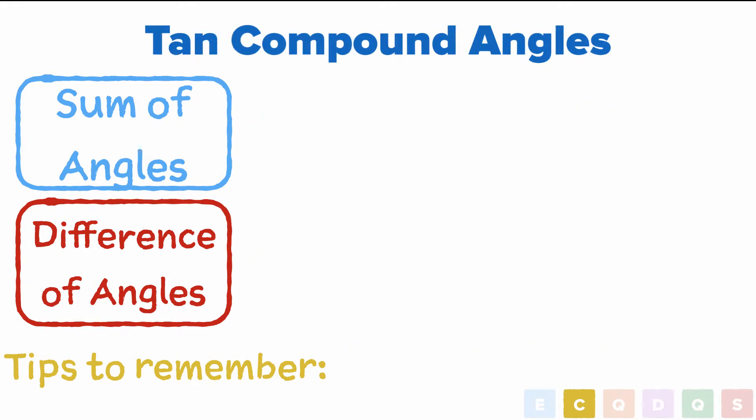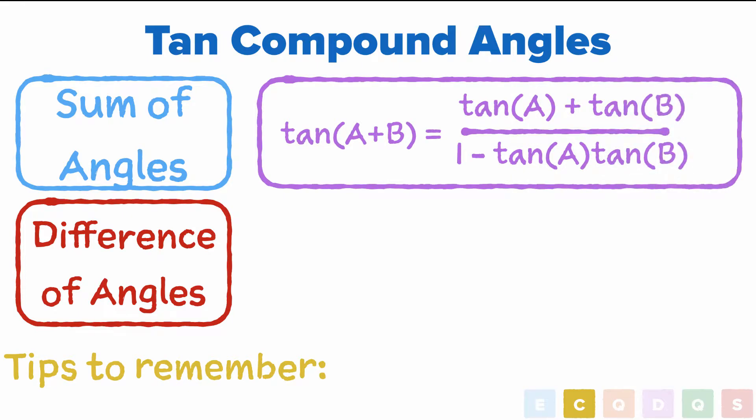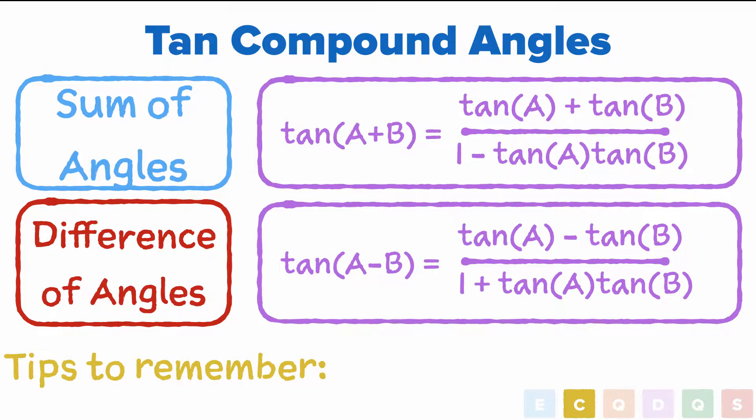Finally, we have tan. For the sum of the angles, it's equal to tan a plus tan b over one minus tan a tan b. And for the difference, it equals tan a minus tan b all over one plus tan a tan b. Again, these two are pretty similar. The only difference being, if we're summing the two angles, we get a plus on the top and a minus on the bottom, and vice versa for the difference.